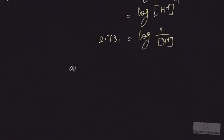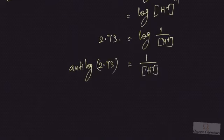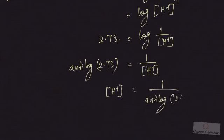Taking antilog of both sides: antilog of 2.73 equals 1 divided by H⁺ ion concentration, and the log cancels. Cross-multiplying gives H⁺ ion concentration equals 1 divided by antilog of 2.73, from which you can get the numerical value.